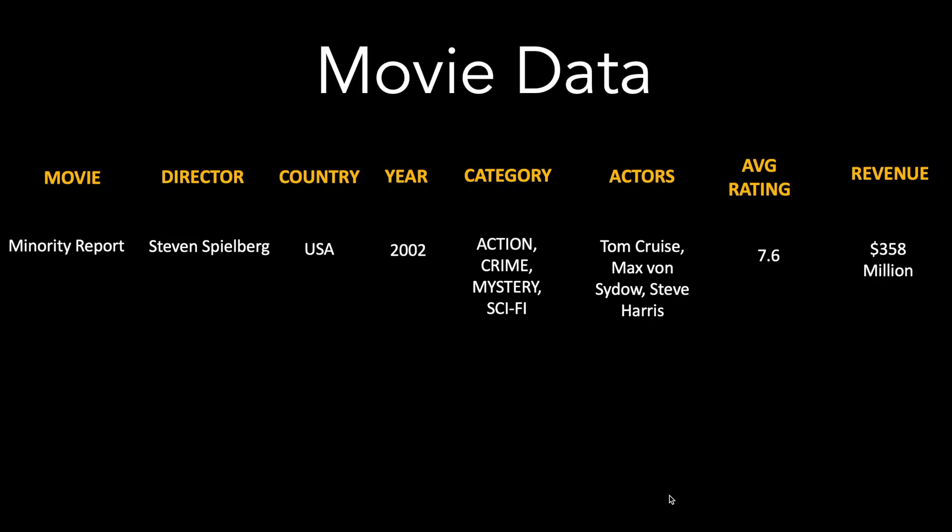Before we go into the arc diagram, here is a glimpse of how the movie data looks like. It has got various information ranging from the movie title and the movie director, right up to the revenue and the ratings. Now if you look closely at the field category, you can see that one movie can be classified into multiple categories. Let me show you how the arc diagram can be extremely useful when you have multiple data packed into a single field.